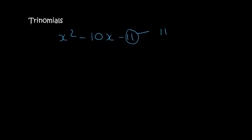Here's another one. So, the number 11 is 11 times 1, and that's all. Now, 11 and a 1 can make minus 10, because a minus 11 plus 1 gives minus 10. So, we open up the two brackets, and we say x minus 11, and x plus 1.